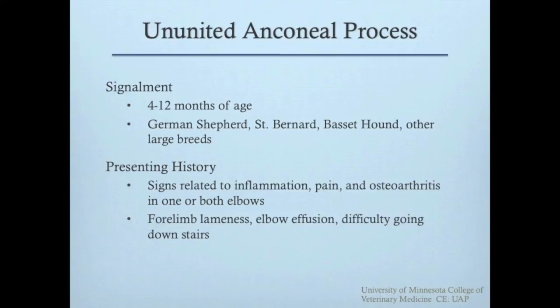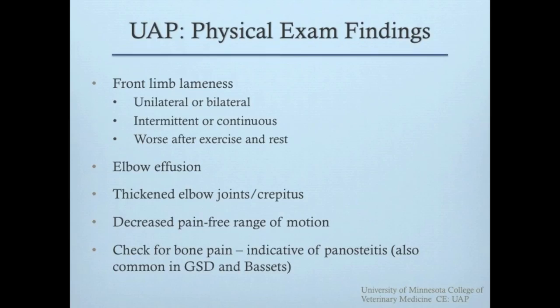Owners may report that the dog has a forelimb lameness, elbow swelling, or has difficulty going down stairs. Physical exam findings for a dog with a UAP are nonspecific and similar to any condition that causes elbow inflammation and pain. Exam findings may include forelimb lameness, elbow effusion or thickening, and elbow pain. Pain during extension of the elbow is the most common orthopedic exam finding.